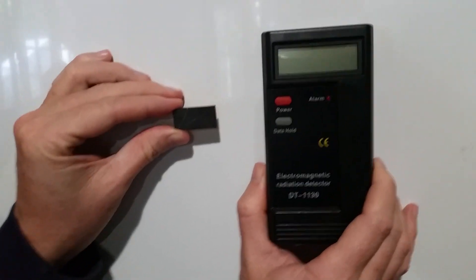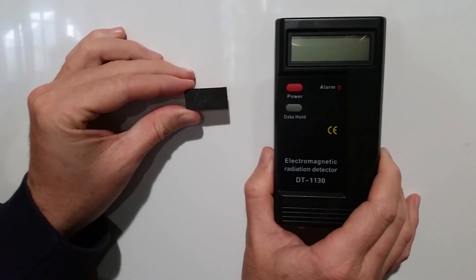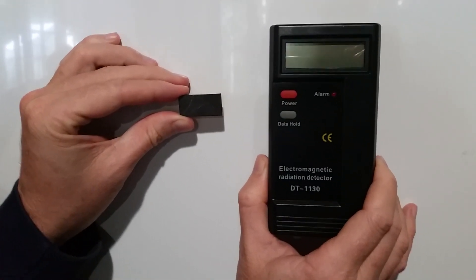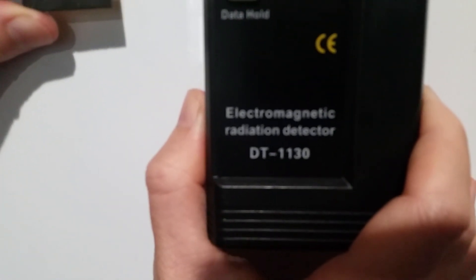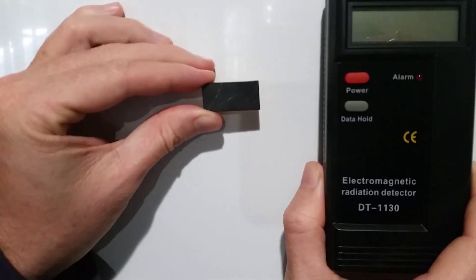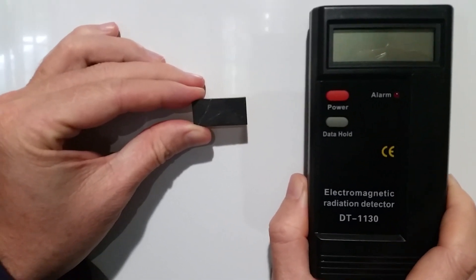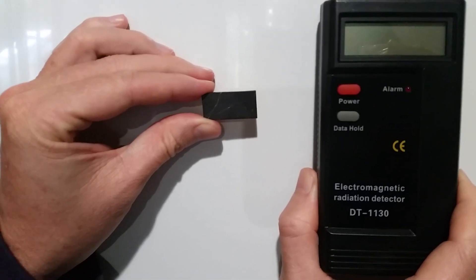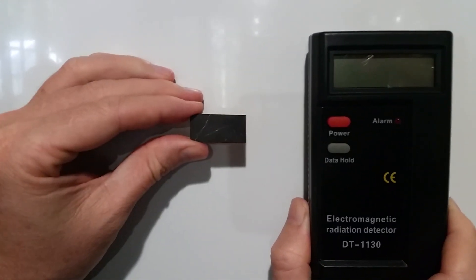I often get asked just how effective shungite is against electromagnetic radiation, so I got myself an electromagnetic radiation detector. We have a piece of shungite here - this is a phone plate. These go on the back of your electronic devices with double-sided stickers, and as you can see, it's not a big piece of shungite.